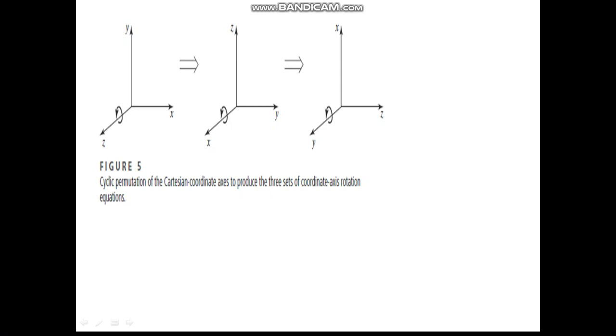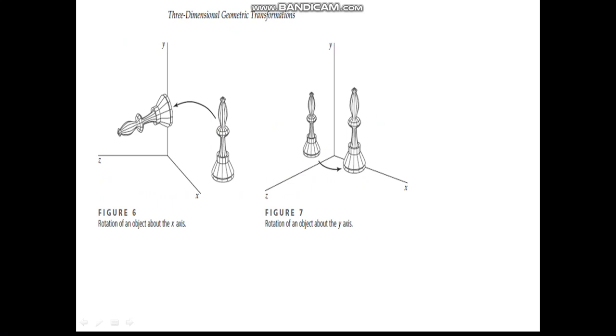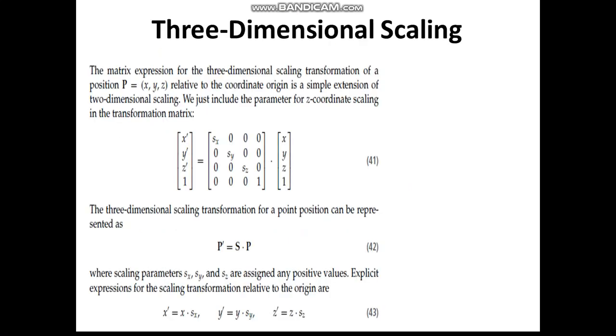This is showing rotation around z-axis, this is showing rotation around x-axis, and this is showing rotation around y-axis. Rotation of an object about x-axis and y-axis are shown in these two diagrams. Z-axis we have already seen.